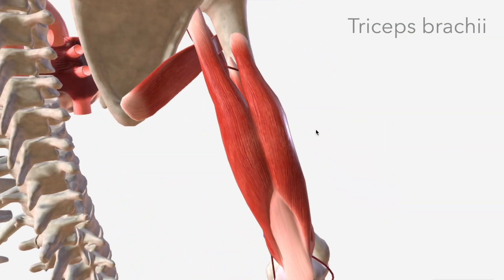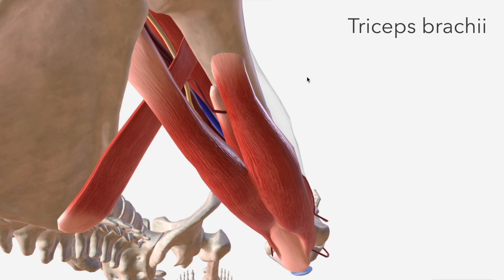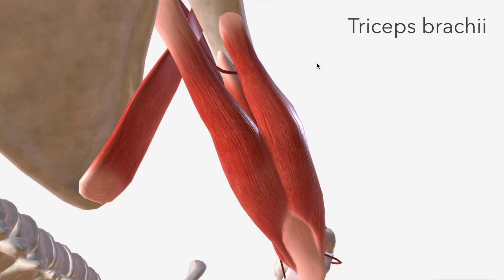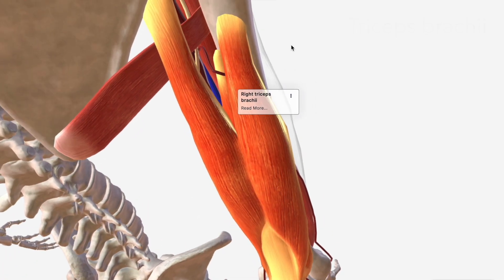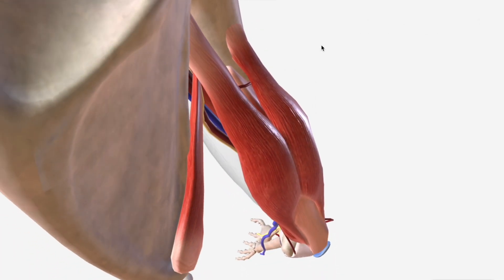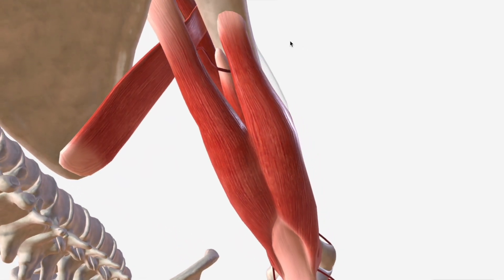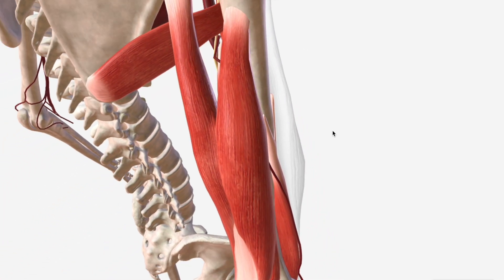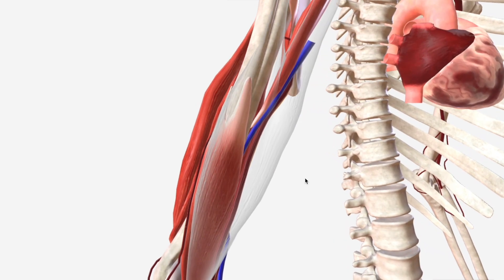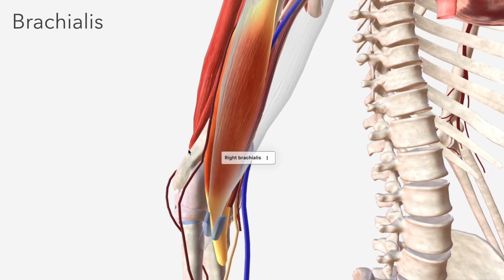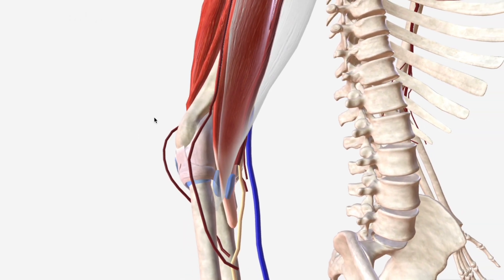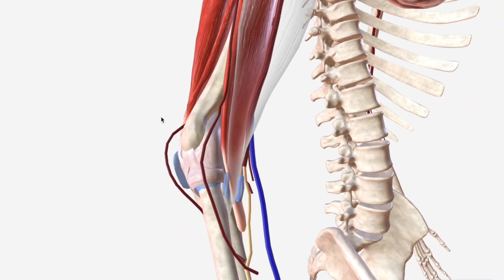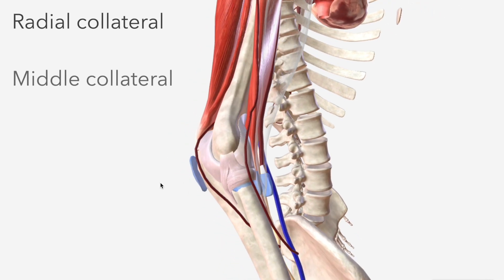Moving around to the back, we can see the triceps brachii muscle, which has three heads — two adhering to the humerus anteriorly and in the middle, and a posterior head which adheres to the scapula. The deep brachial artery is transmitted through the space between these two heads. It curves around the lateral aspect of the brachialis muscle before terminating by bifurcation into the radial collateral artery and the middle collateral artery.